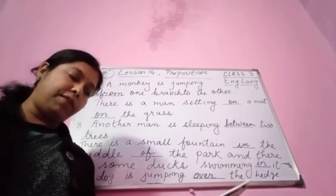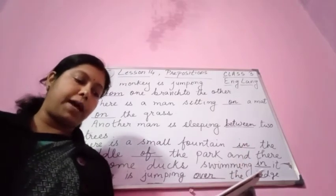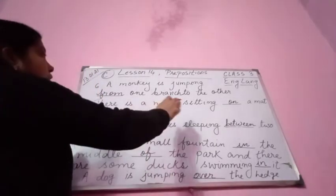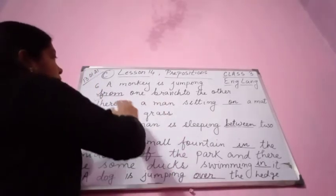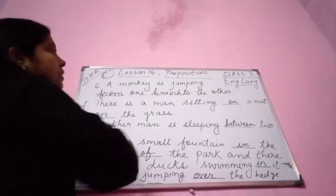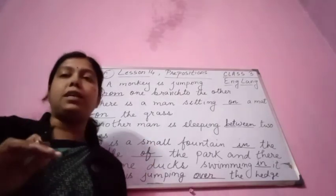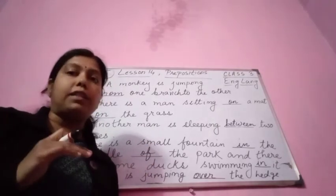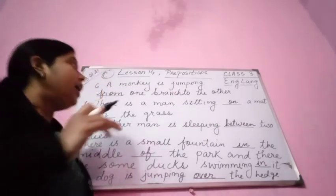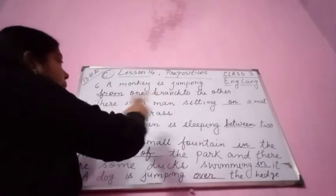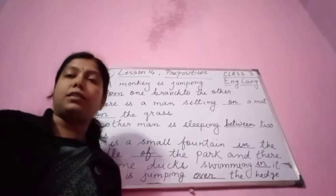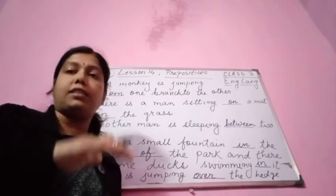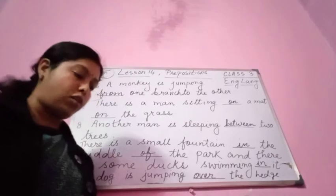Number 7: there is a man sitting on a mat on the grass. We are using 'on' twice — he is sitting on the mat, meaning his body and the mat are in contact with each other. And the mat is on the grass, so the grass is touching the mat. That is why we use 'on' here.